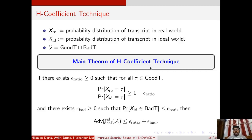The main theorem of the H-coefficient technique states: if there exists a positive real number epsilon_ratio such that the ratio of real-to-ideal interpolation probability is lower bounded by (1 − epsilon_ratio) for all good transcripts, and there exists a positive real number epsilon_bad such that the probability that the transcript belongs to the bad set is upper bounded by epsilon_bad, then the distinguishing advantage between the real and ideal world is upper bounded by the sum epsilon_ratio + epsilon_bad.